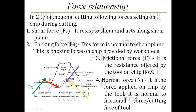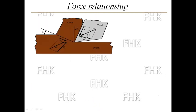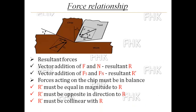Fs and Fn are perpendicular to each other, and F and N are perpendicular to each other. These force pairs are combined so that their resultants can be found. The resultant R is the vector addition of F and N, and the resultant R' is the vector addition of Fs and Fn.